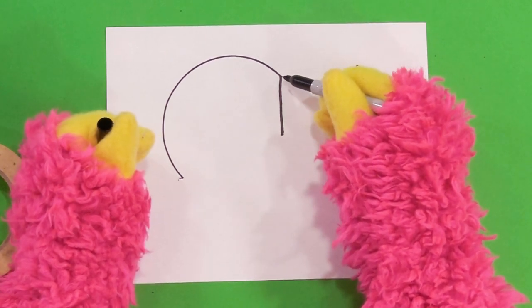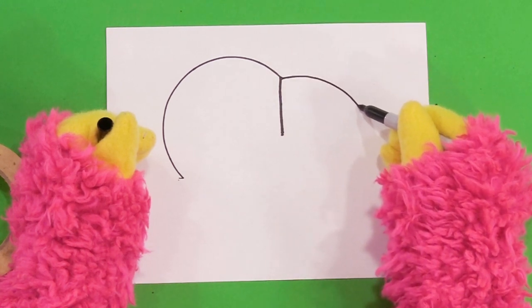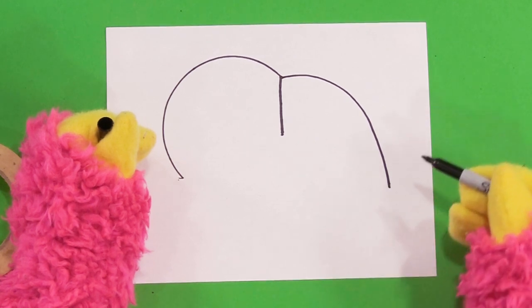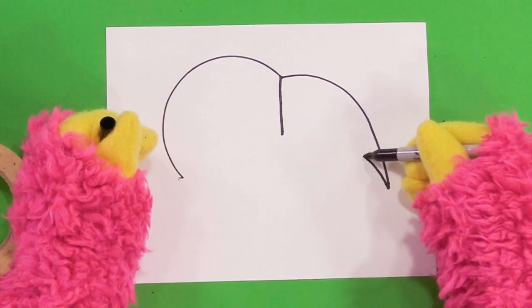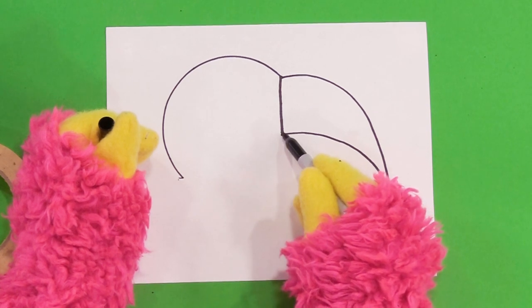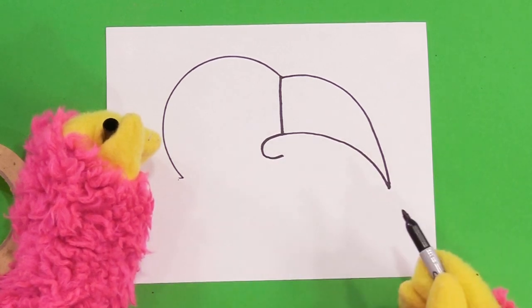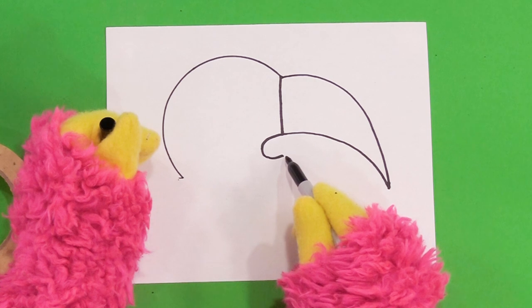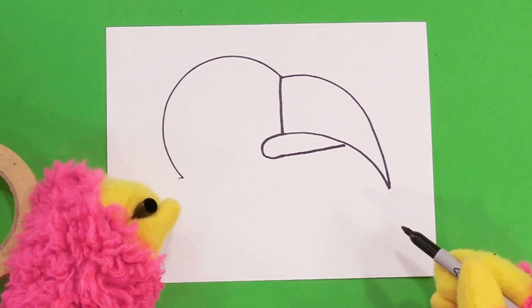I'm going to do the beak, because toucans have a really long beak, kind of like this. And I'm going to start from here and go back up to there. Now for the next spot, I'm going to go around here, making a little letter U that's laying on its side. And now I'm going to extend this straight across to here. So that's the mouth of our toucan.